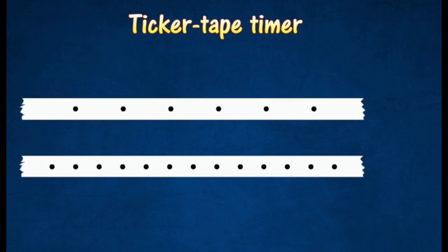The distance between successive dots on a ticker tape depends on the velocity of the tape. If the tape moves quickly, the dots are far apart. If the tape moves slowly, the dots are close to each other.